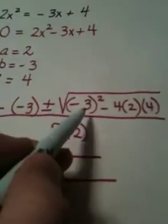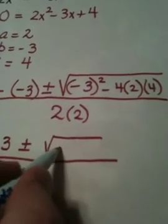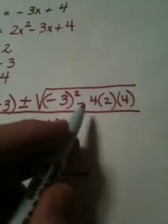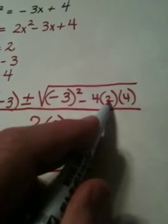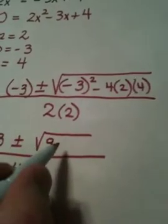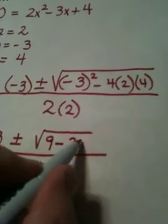Under the radical, negative 3 quantity squared is 9. Negative 4 times 2 is negative 8, times 4 is a negative 32.